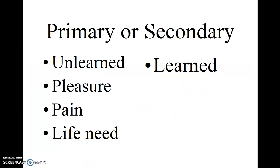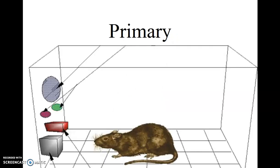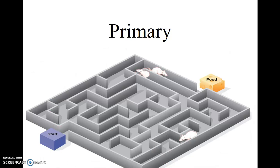Indeed, anything that meets a basic life need could be regarded as primary reinforcers. Food would be a good example, and we see this in most of the conditioning of laboratory rats, whether in a Skinner box where the primary reinforcer is food, or rats running a maze, again, where the primary reinforcer is food.